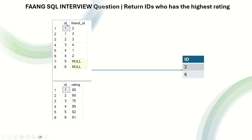In the friends table you have the mapping between ID and friend ID, and in the ratings table you have a rating for every ID. The question is: you need to return the IDs whose rating is greater than their friend IDs' ratings. For example, ID 1 has a rating of 85, and ID 1 has friends 2 and 3.